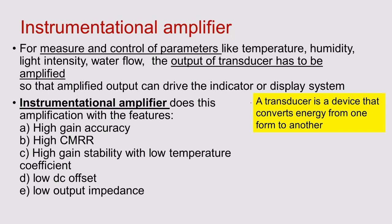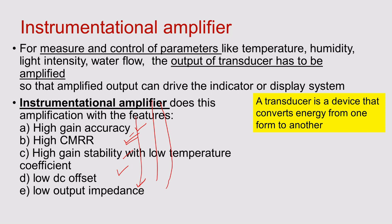Basically, a transducer is a device that converts energy from one form to another form. Now, the important features of the instrumentation amplifier are: it should have high gain accuracy, high CMRR, high gain stability, low DC offset, and low output impedance. This low output impedance is very important to avoid the loading effect in the next stage of your op-amp. These are the best features available in the instrumentation amplifier.